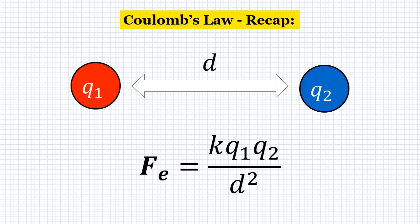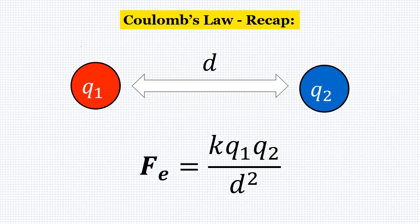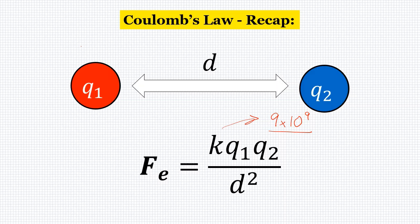Coulomb's Law is essentially finding the force between two particles. So I have a charged particle Q1 and a charged particle Q2, and I'm also looking at the distance between those particles. In my equation, Fe equals K — K is always 9 times 10 to the 9th, it's a constant. Q1 is the charge of particle 1 in Coulombs, Q2 is the charge of particle 2 in Coulombs, and then the distance, which we're going to square, is measured in meters.